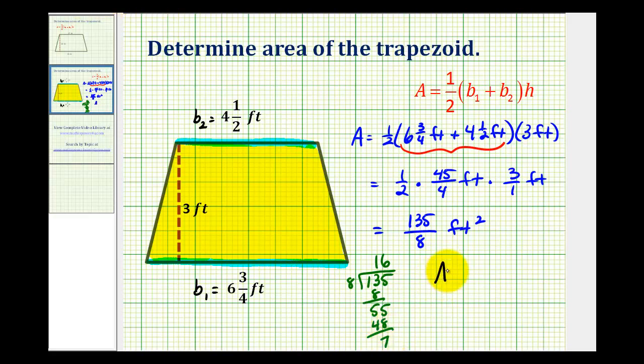Which tells us the area is going to be equal to sixteen and seven eighths feet squared. This is the number of square feet that will fit inside this trapezoid or inside this yellow shaded region.